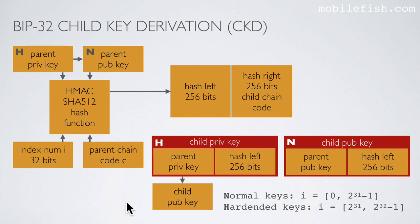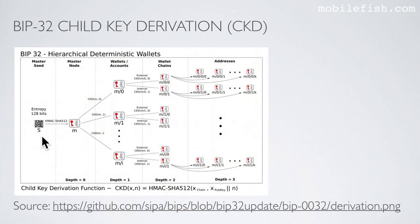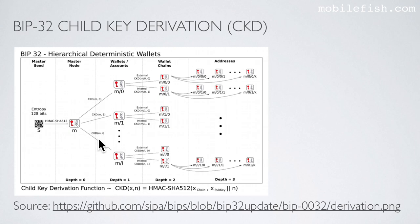What we have now done is a child key derivation. We started with the BIP32 seed and created the parent private key, parent public key and the parent chain code — this is called the master node. If we keep the parent private key and the parent chain code the same but increase the index number, we generate child private keys and child public keys. In fact what we have created is a wallet with different addresses.